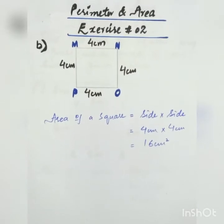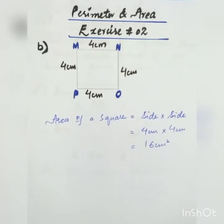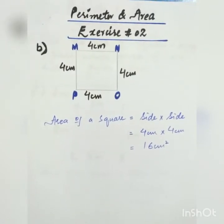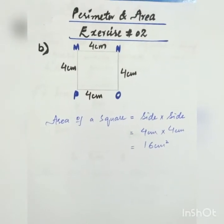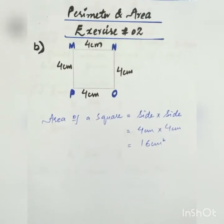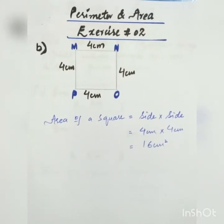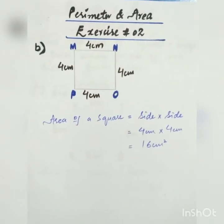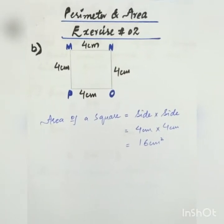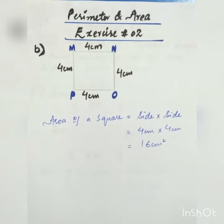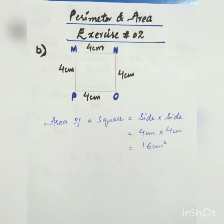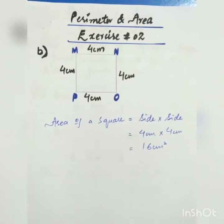Part B — here we have a square shape figure and we have to find its area. Area of a square is equal to side into side. We have 4 sides in a square shape and each side is equal to 4 centimeters. Putting the values in the formula: 4 centimeters into 4 centimeters. We multiply 4 with 4: 4 fours are 16. So the area of the square is 16 centimeters square.